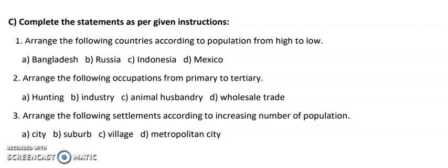First question has four countries like Bangladesh, Russia, Indonesia, Mexico. You have to arrange according to population from high to low. High to low means like in class when rankers come, first, second, third. Like that only we are going to rearrange.